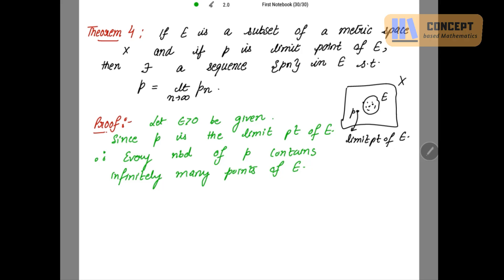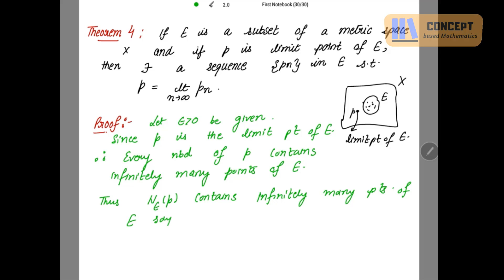Can we define a neighborhood of P now? Yes. So let N_ε(p) be the neighborhood of P with radius epsilon. Then N_ε(p) contains infinitely many points of E. In E we have a sequence pn, so we can define the points as p1, p2, p3, p4, and so on — all these points lie inside the neighborhood.